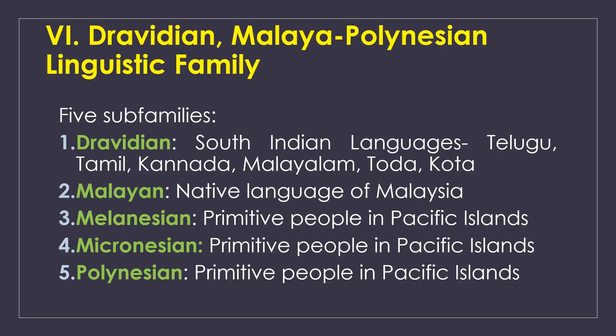The Dravidian-Malay-Polynesian linguistic family is divided into 5 sub-families. The first is Dravidian — South Indian languages including Telugu, Tamil, Kannada, Malayalam, Toda, and Kota. The second is the Malayan group — Malaysian native languages. The other three are Melanesia, Micronesia, and Polynesia — the languages of the Pacific Island peoples.